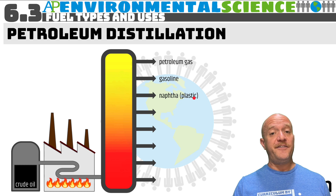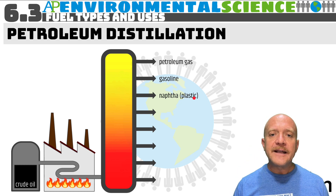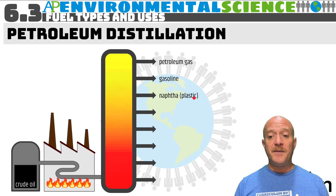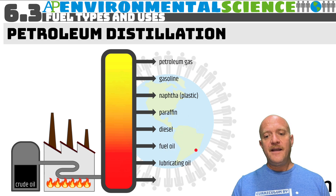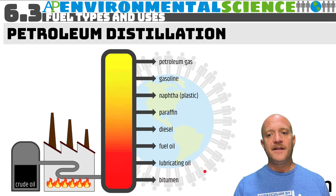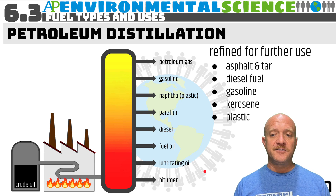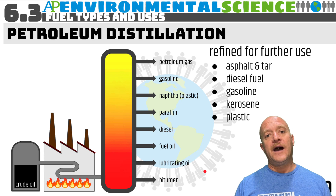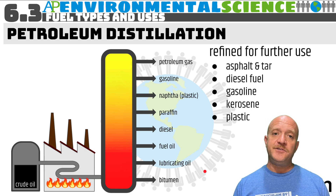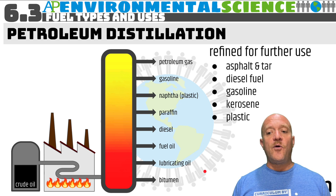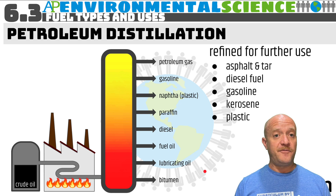You also get naphtha, which is used in manufacturing plastic — plastic predominantly comes from petroleum, though it can be made from other sources. Then paraffin, which is related to waxy substances; diesel; fuel oil for heating; lubricating oil; and finally bitumen, which has the highest boiling point. These can be refined into asphalt and tar for roads, diesel fuel, gasoline, kerosene for lamps, and plastic. All of these products originally come from crude oil or petroleum.